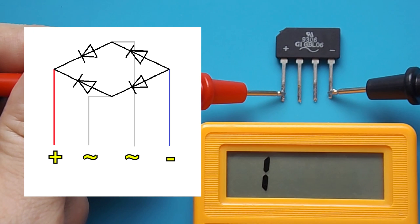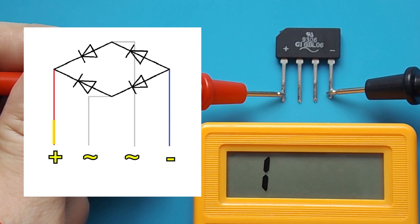Checking the diode bridge begins with the fact that the red probe is applied to the plus and the black probe to the minus. In this position, all diodes are closed. The current does not go anywhere, and therefore the multimeter shows nothing.